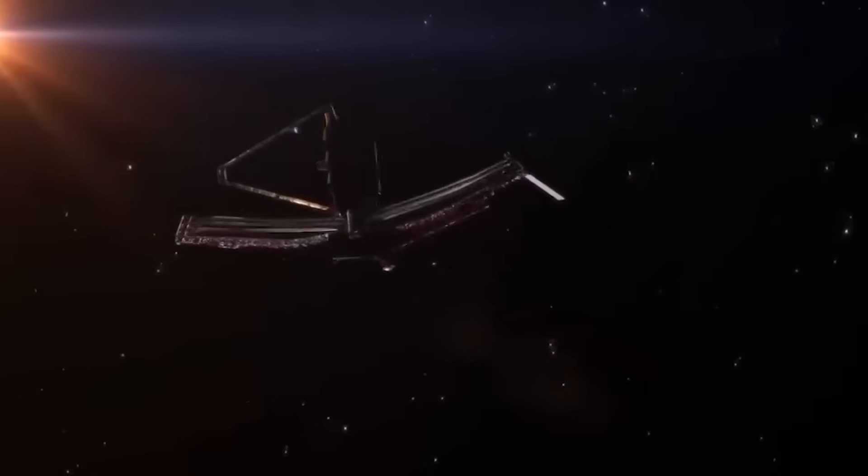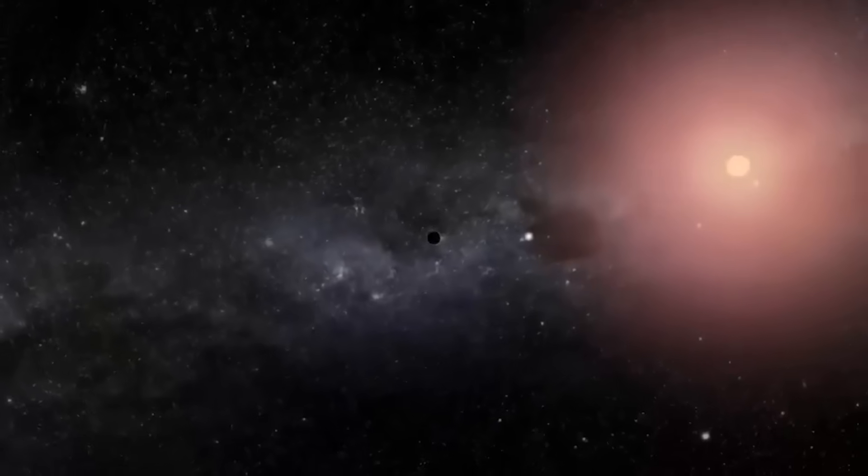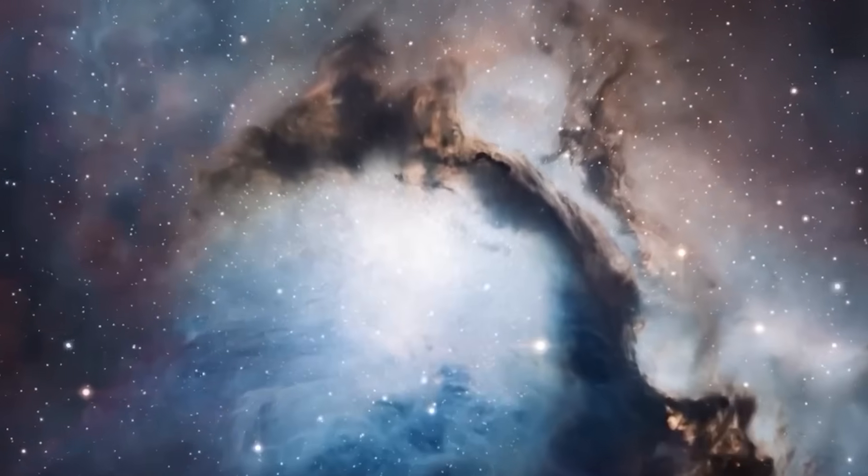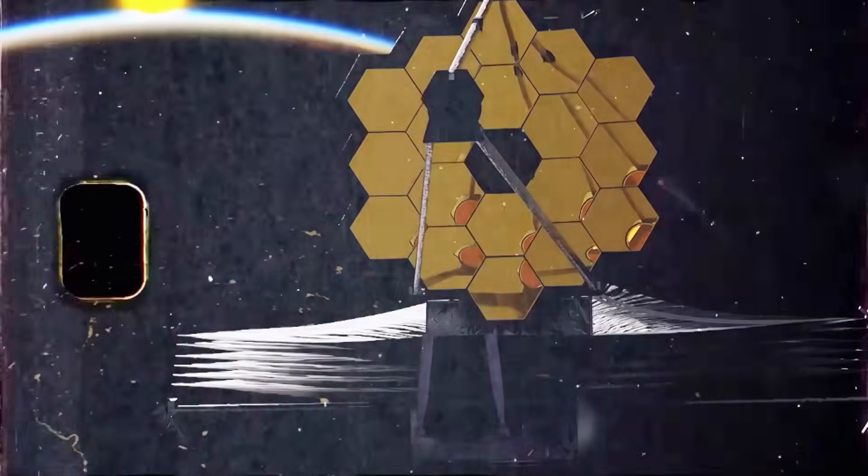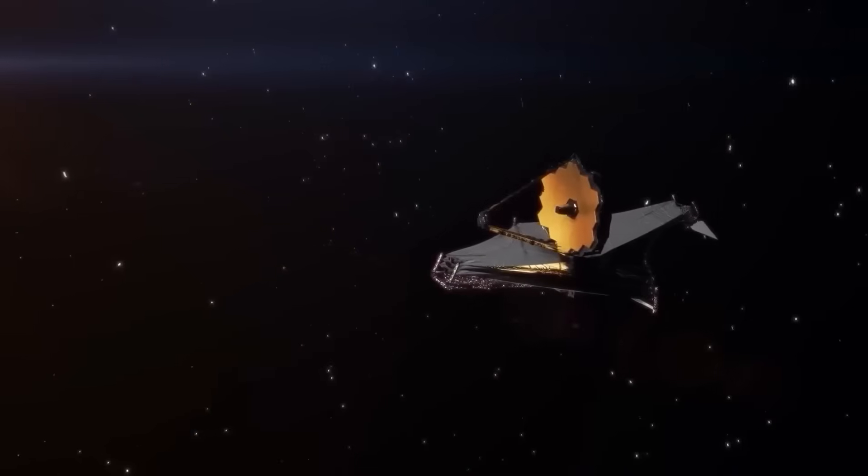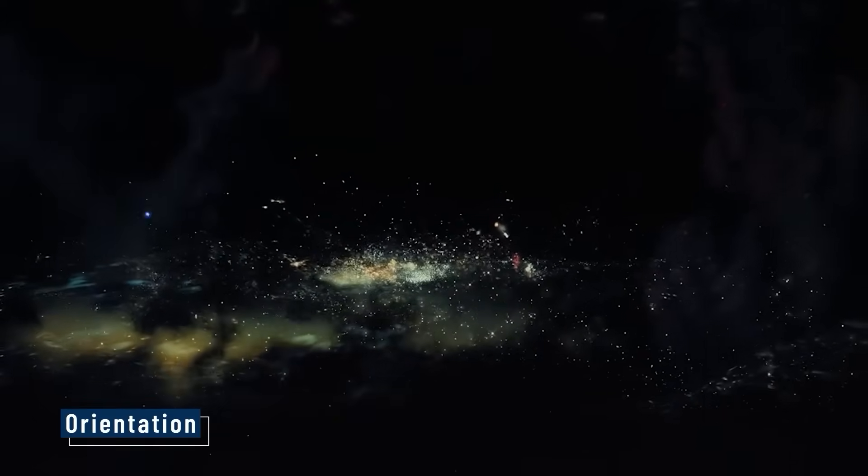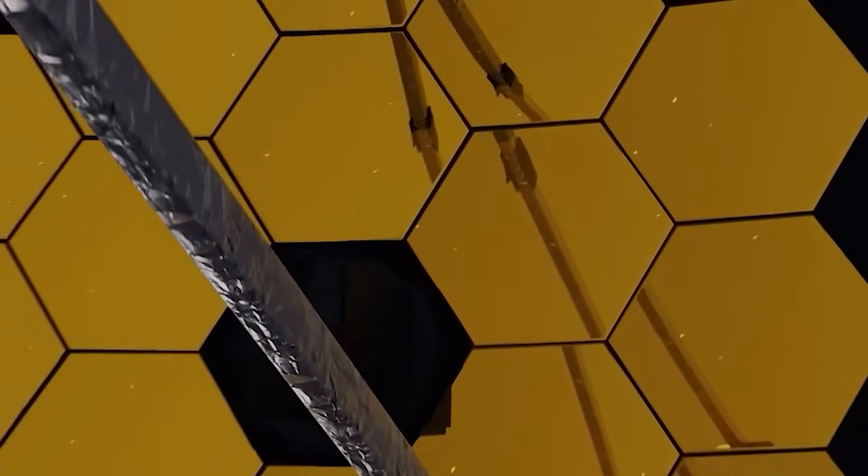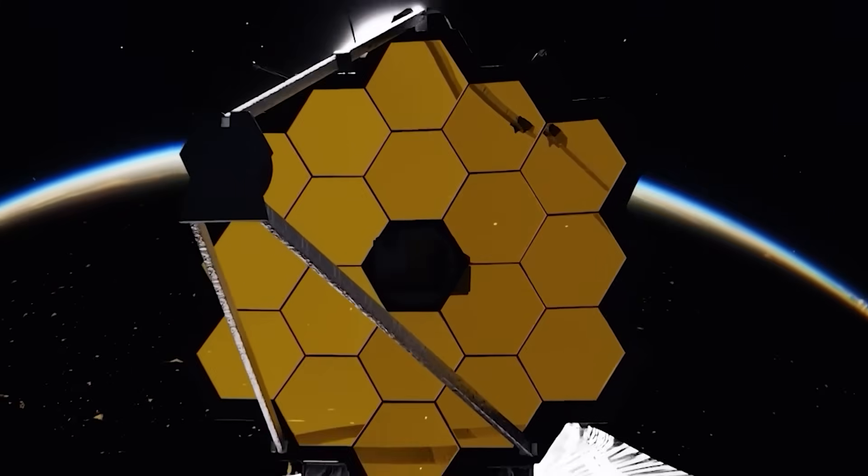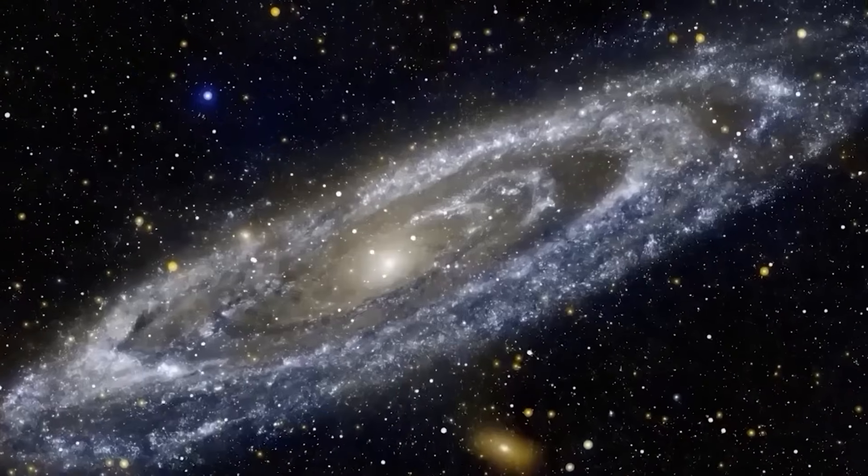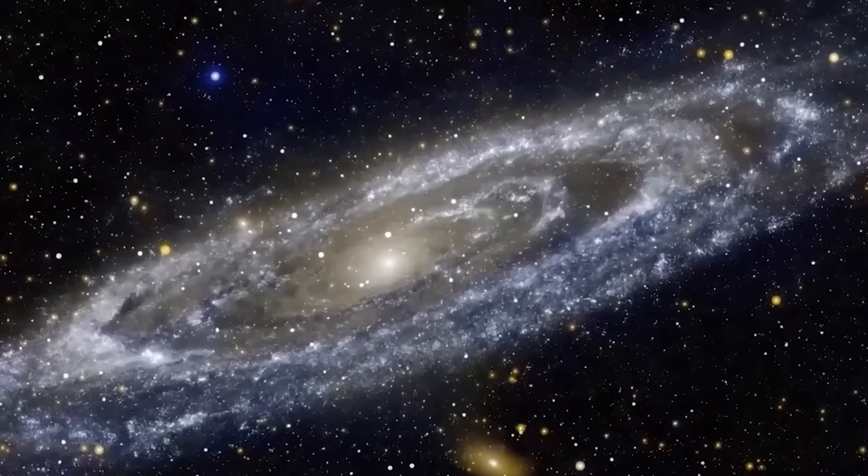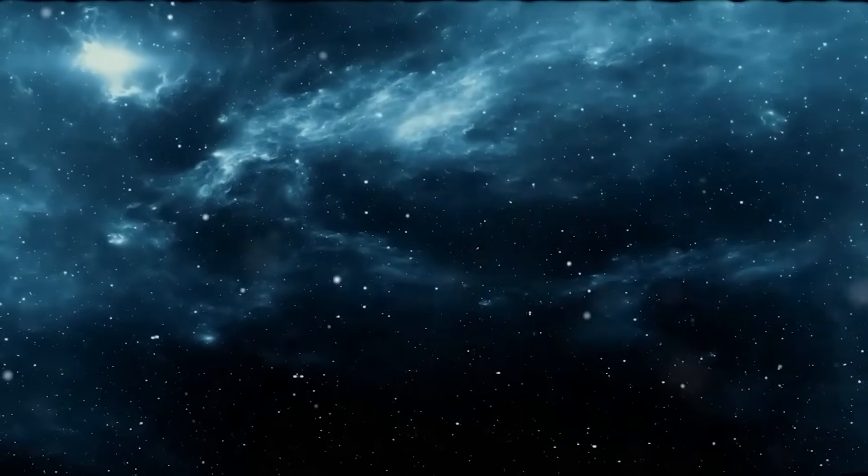JWST got a straight-on shot, making the discovery cleaner and easier to interpret. All this effort, masking the star, using infrared, combining ground and space data, and taking advantage of the system's orientation, created the perfect conditions. Thanks to these factors working together, JWST didn't just spot another exoplanet. It documented a planet in the act of forming, a scientific first-of-its-kind moment captured in detail.